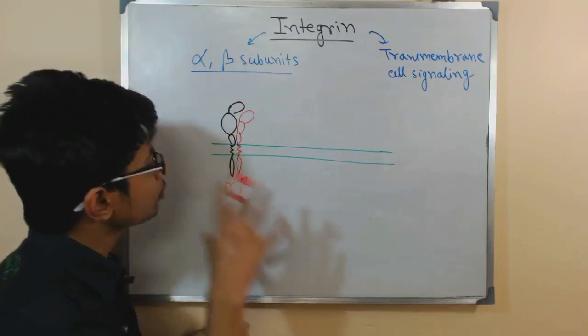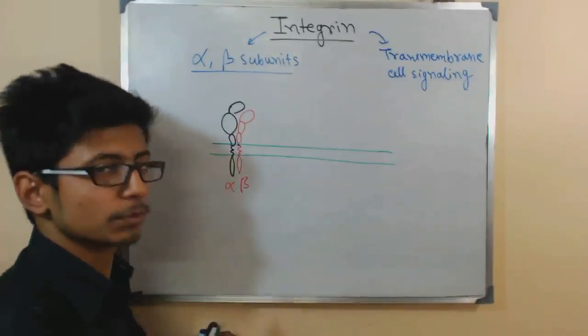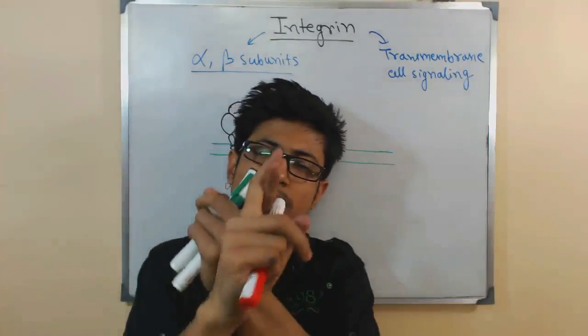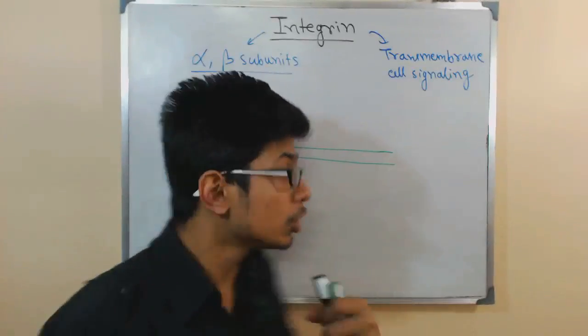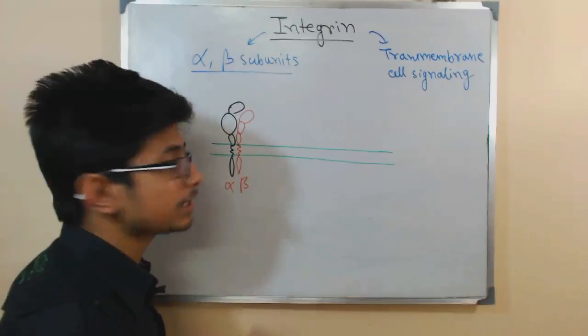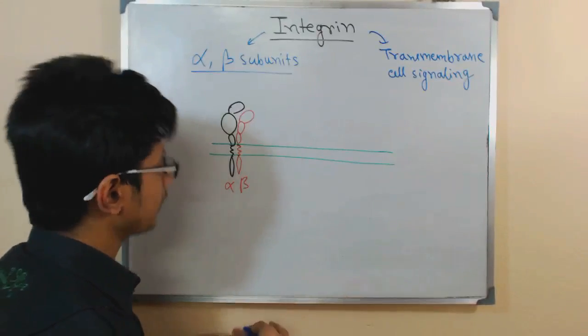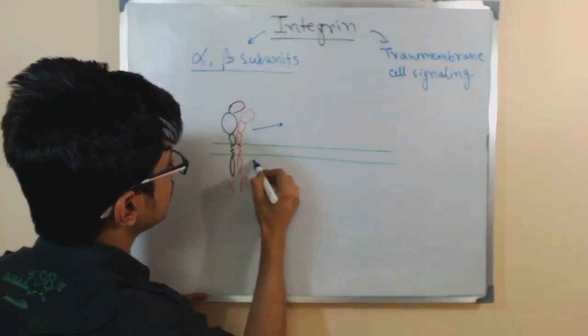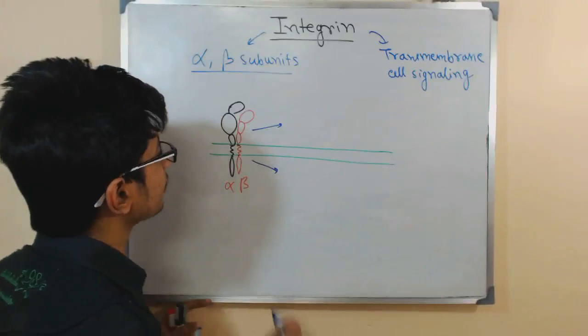So, in both the signaling, usually integrin is in inactive form. It will look like this. Both the subunits are very close to each other. They are kind of bended like that. So, once any kind of signal reception occurs, that can be two different types. One is inside-out, another one is the outside-in.